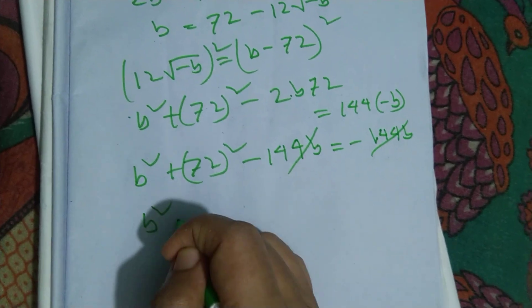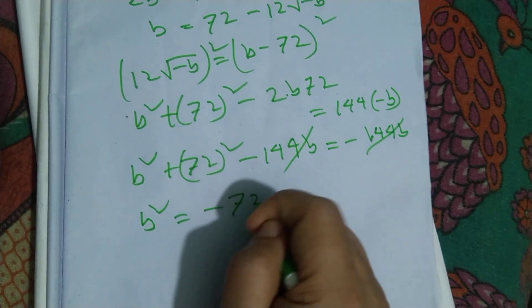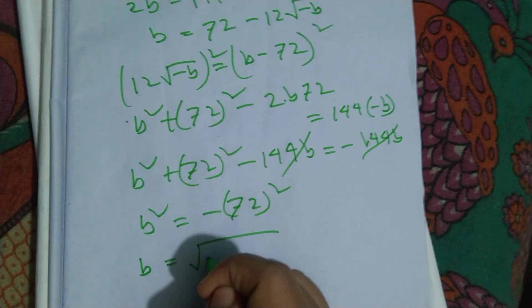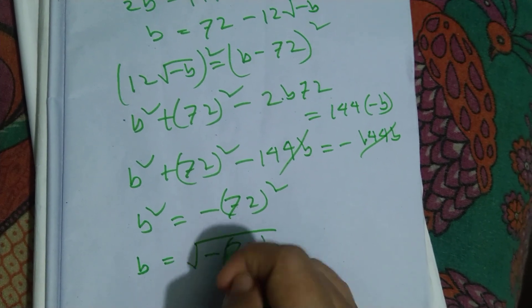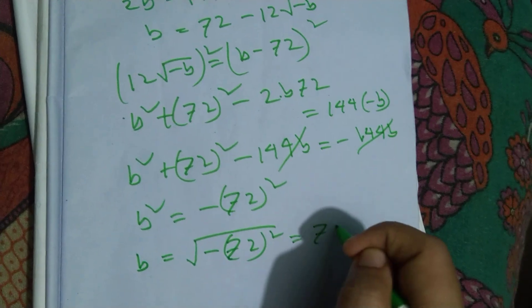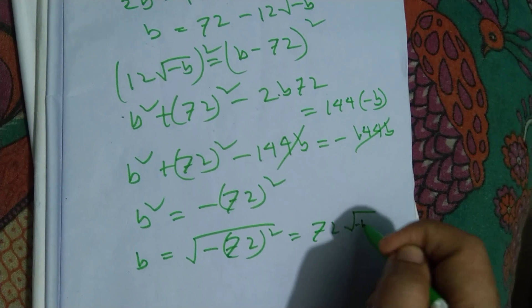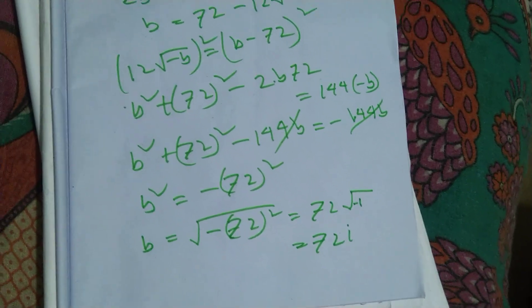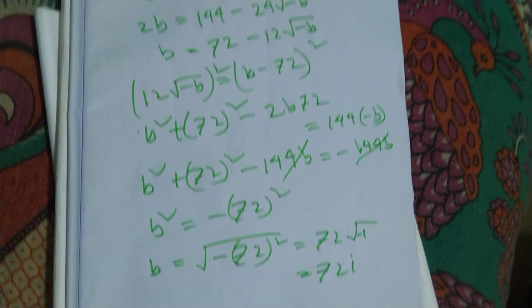So I get B square is equal to minus 72 whole square. Now B is equal to root over minus 72 whole square, which is equal to 72 root over minus 1, that is 72i. Thanks for watching, I hope it is clear for everyone.